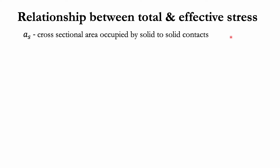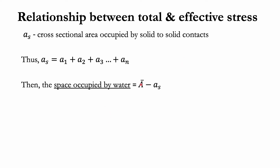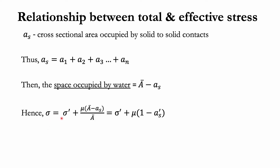If we let A_S equal the cross-sectional area occupied by solid-to-solid contacts, then A_S equals A_1 plus A_2 plus A_3 up to A_n. The space occupied by water is A minus A_S. Hence, total stress can be expressed as effective stress plus μ times (Ā minus A_S) all over Ā, which simplifies to effective stress plus μ times (1 minus A′_S).